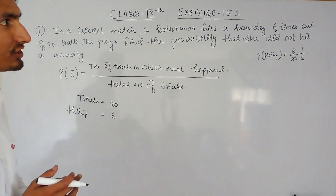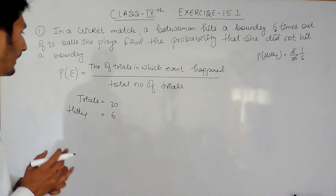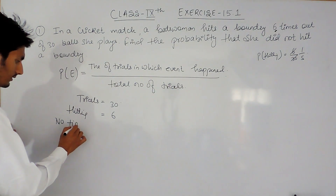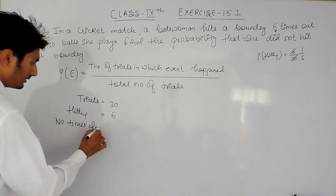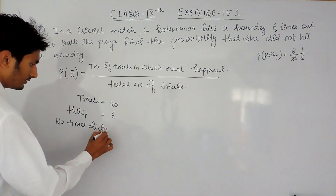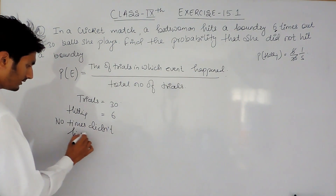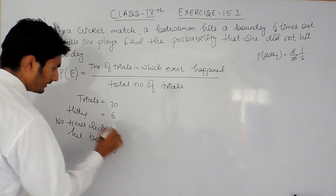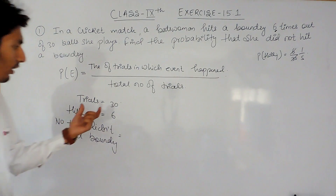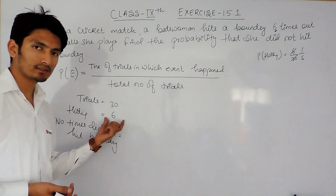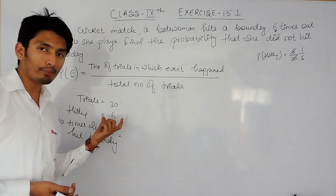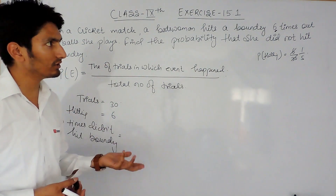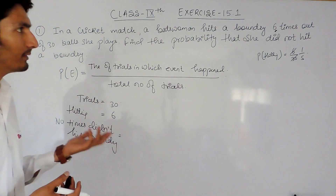But here we have to find the probability that she did not hit a boundary. The number of times she did not hit a boundary — because on every 30 balls she hit six times, so the remaining balls would be those in which she wasn't able to hit a boundary.